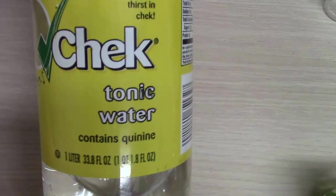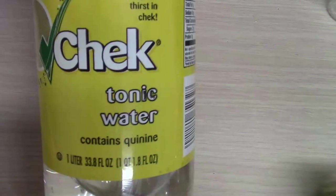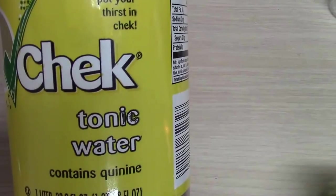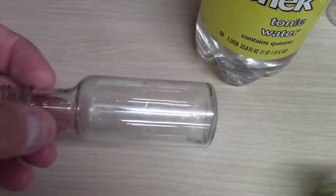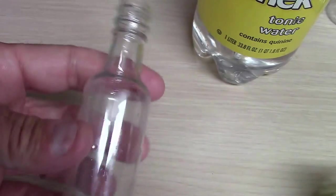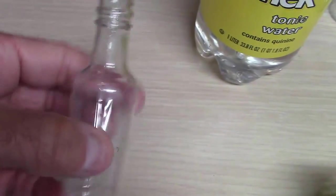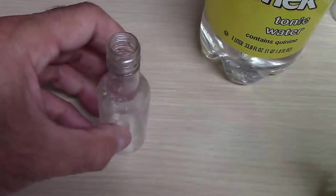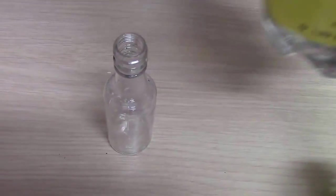Tonic water glows a real beautiful blue, so what I recommend you do is get some little bottles. These happen to just be mini bottles, but you could probably use baby food jars or something like that. So I'm going to pour some tonic water in here.